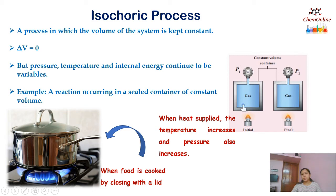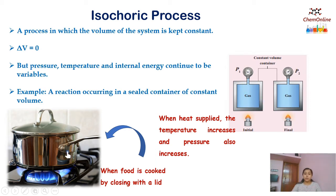In this image, you can see that gas is enclosed in a cylinder and the volume is kept constant. But when heat is supplied, the temperature increases and the pressure also increases — you can see the change in pressure from P1 to P2, but the volume remains constant. This is an example of an isochoric process. Another simple example is when we boil water or cook food in a vessel closed with a lid — since the vessel is closed, the volume remains constant, but since heat is supplied, the temperature or pressure may increase.